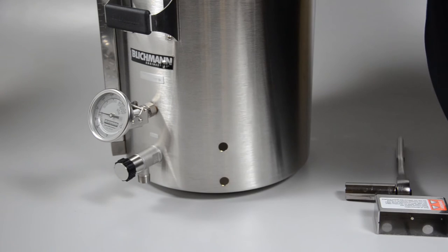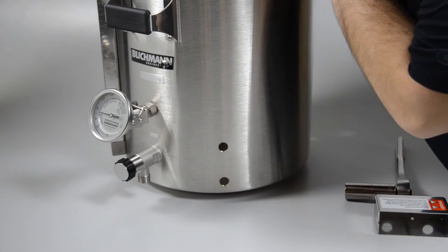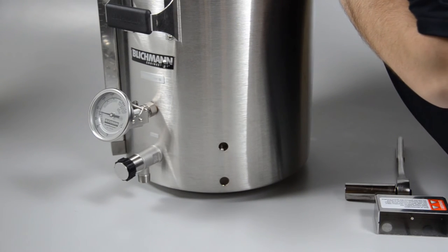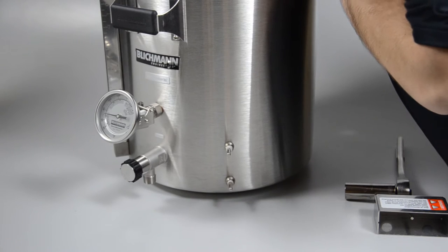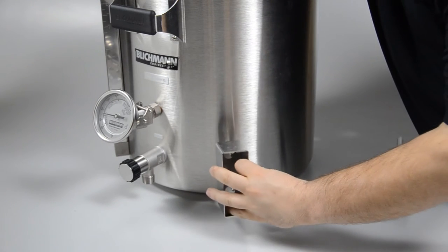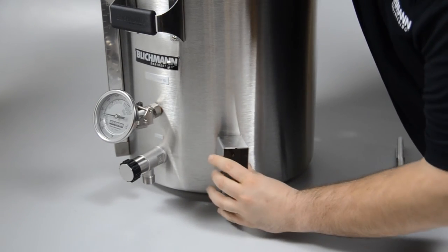Lower the boil coil into the kettle at an angle with the terminal pins pointed downward. Guide the terminal pin and bulkhead through the respective holes. After the threaded portion of the bulkhead protrudes through the holes, install the plug protector.